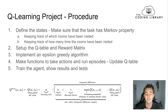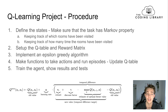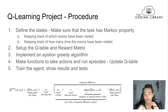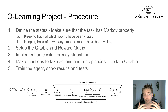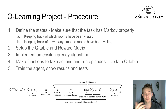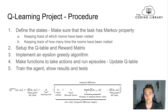The procedure for this project starts with defining the states for our Q-learning and our Q-table. We need to make sure the task has the Markov property, because if it depends on previous states the agent has visited, we can't use Q-learning to find the optimal policy.